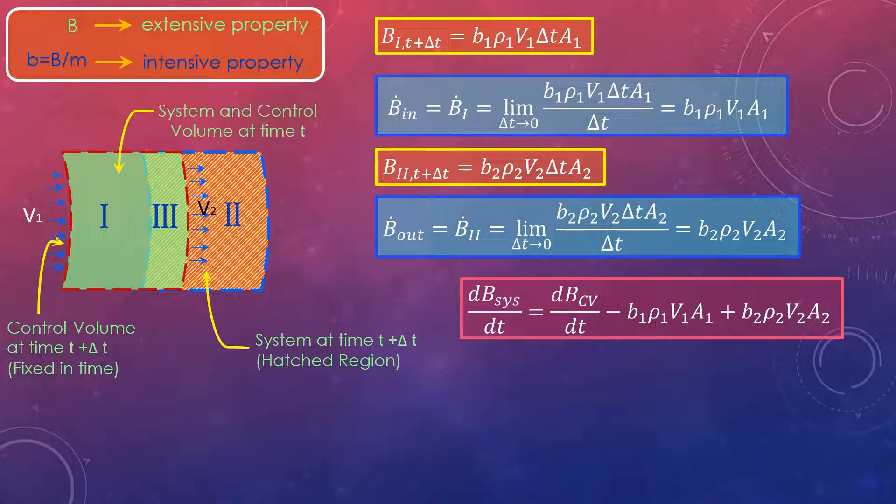In this present derivation the influx B_in and outflux B_out is very easy to determine since there is only one inlet and one outlet and the velocities are normal to the surface at section 1 and 2. However we may have several inlet and outlet ports and the velocity may not be normal to the control surface. So we need to generalize this expression further.